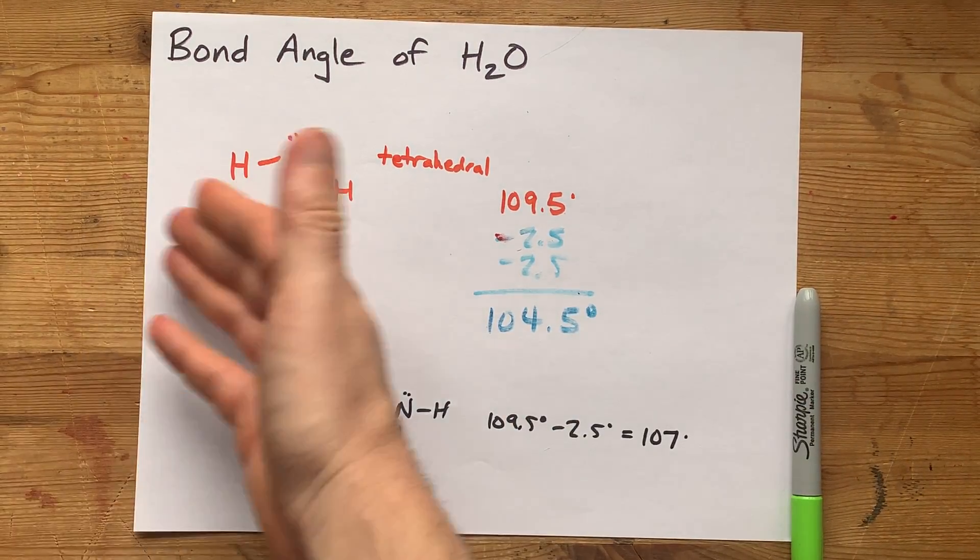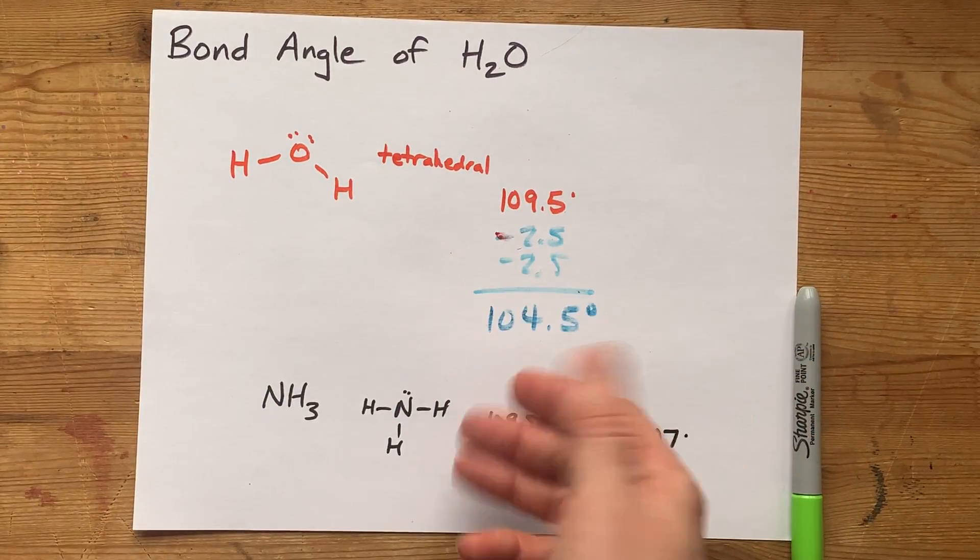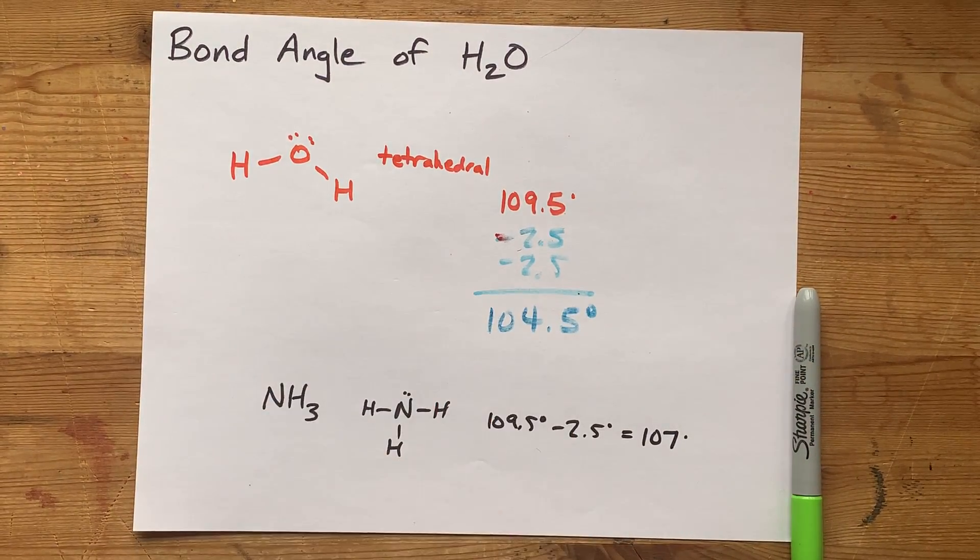The bond angle for H2O is 104.5 degrees, whether you look it up or whether you do it with my method. Thanks for being with me, and best of luck.